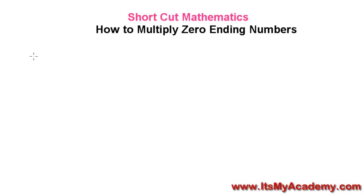Let me take an example. Let's say it's 2 and it's 3. There are no zeros here — I'm doing this on purpose. So 2 times 3, that is 6.